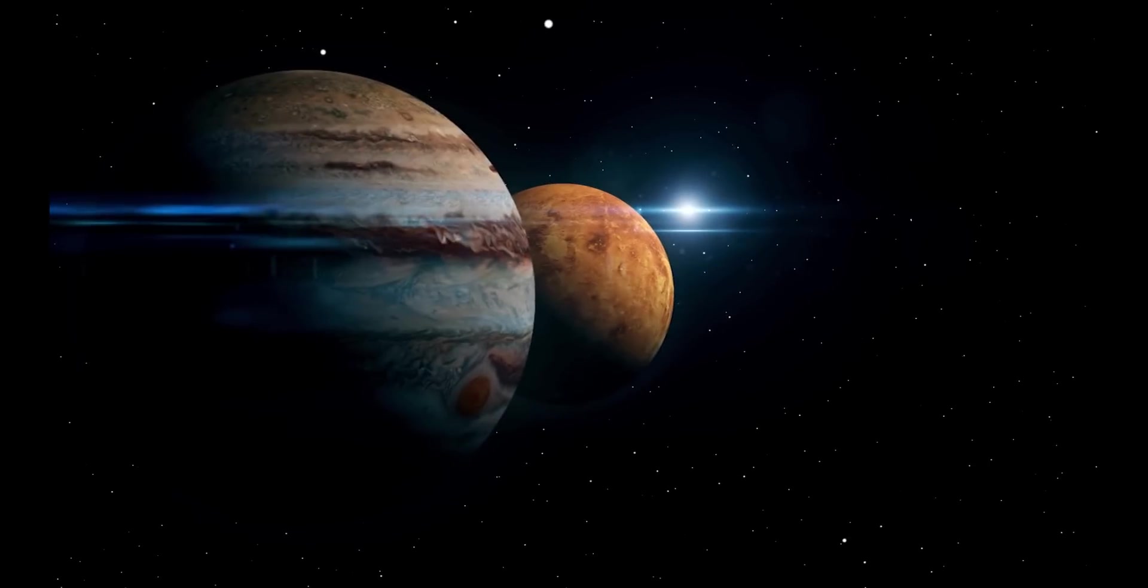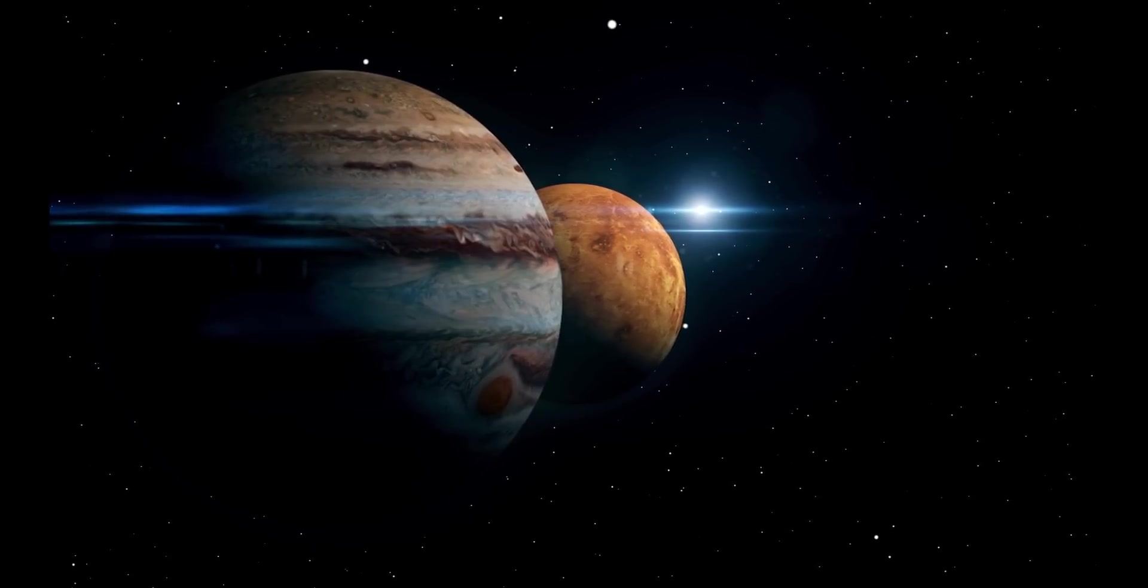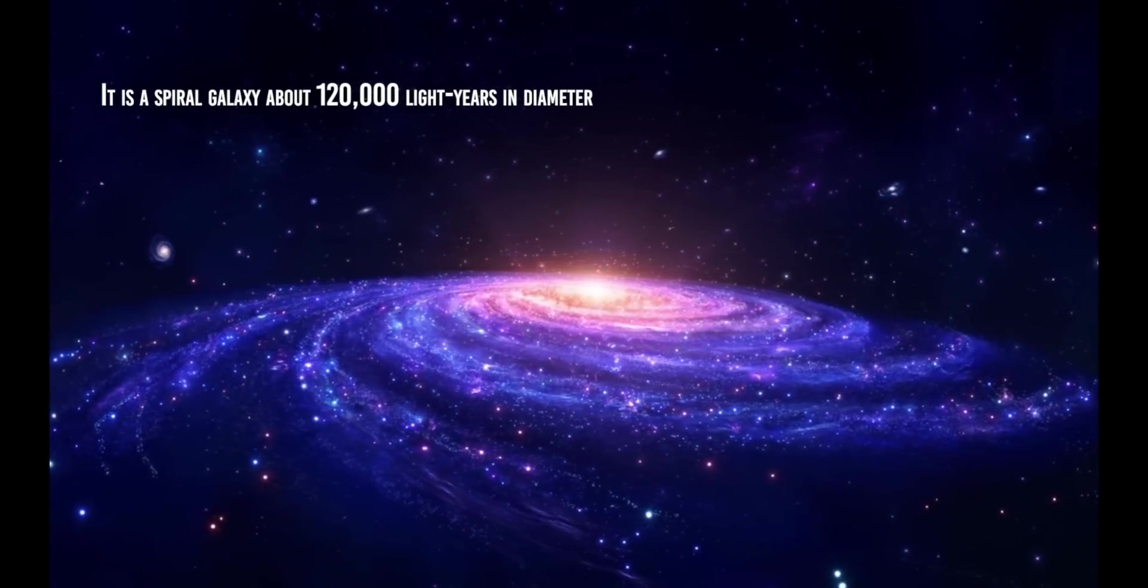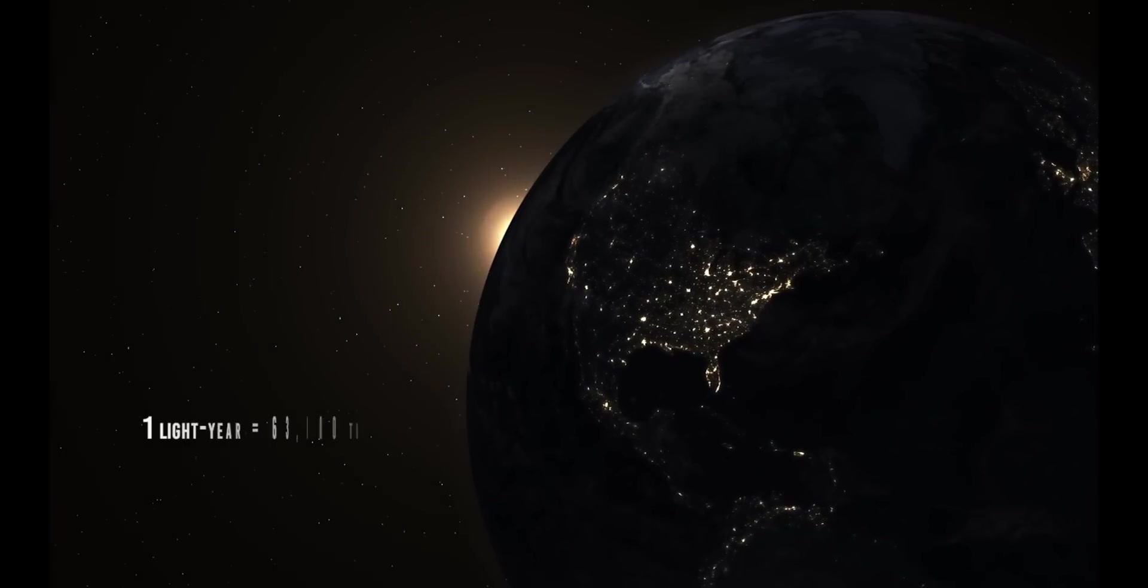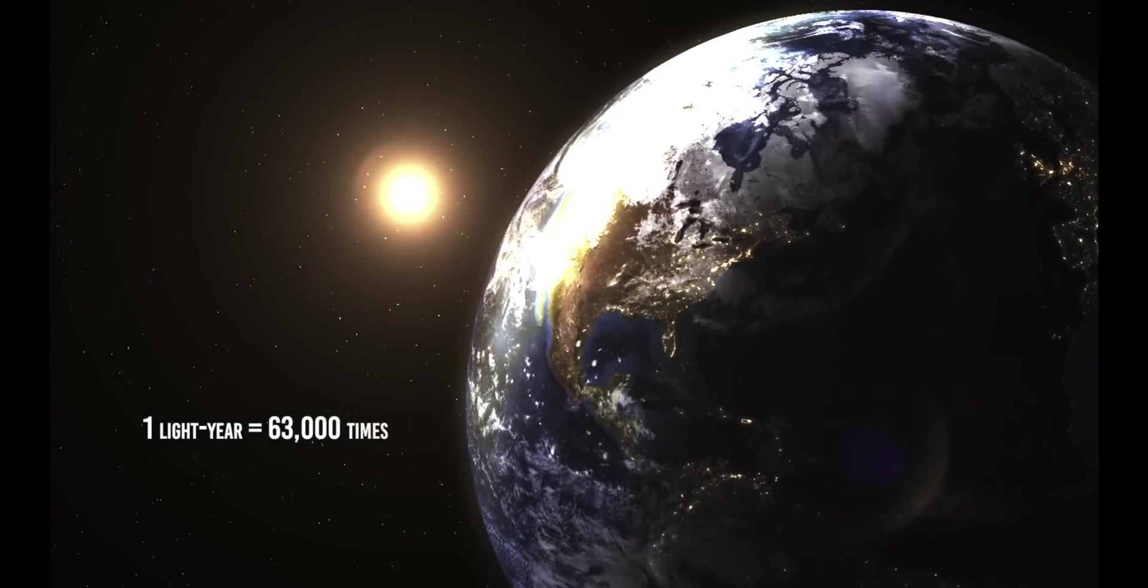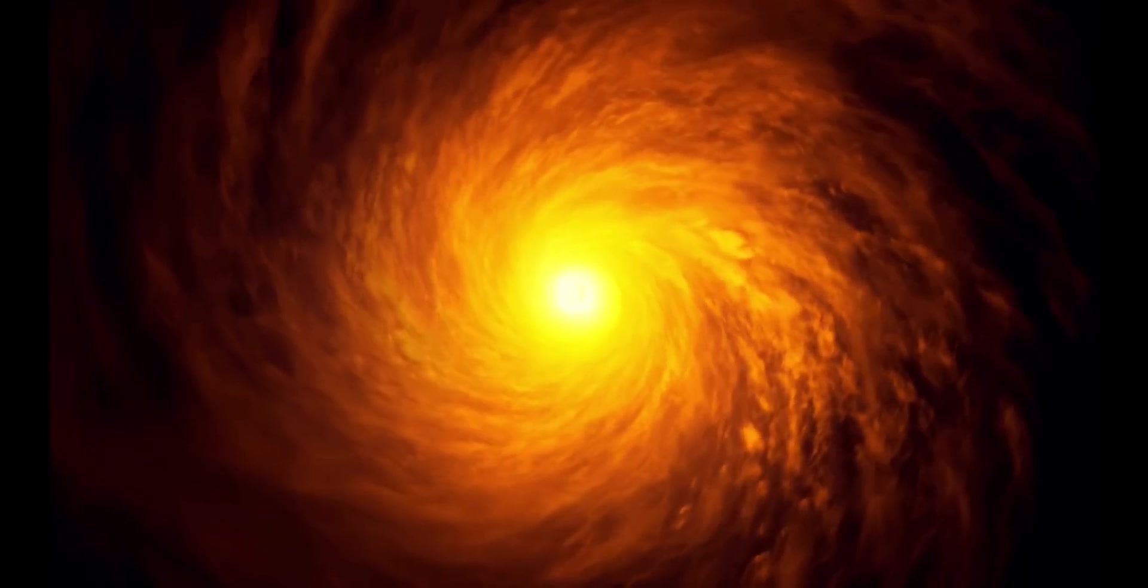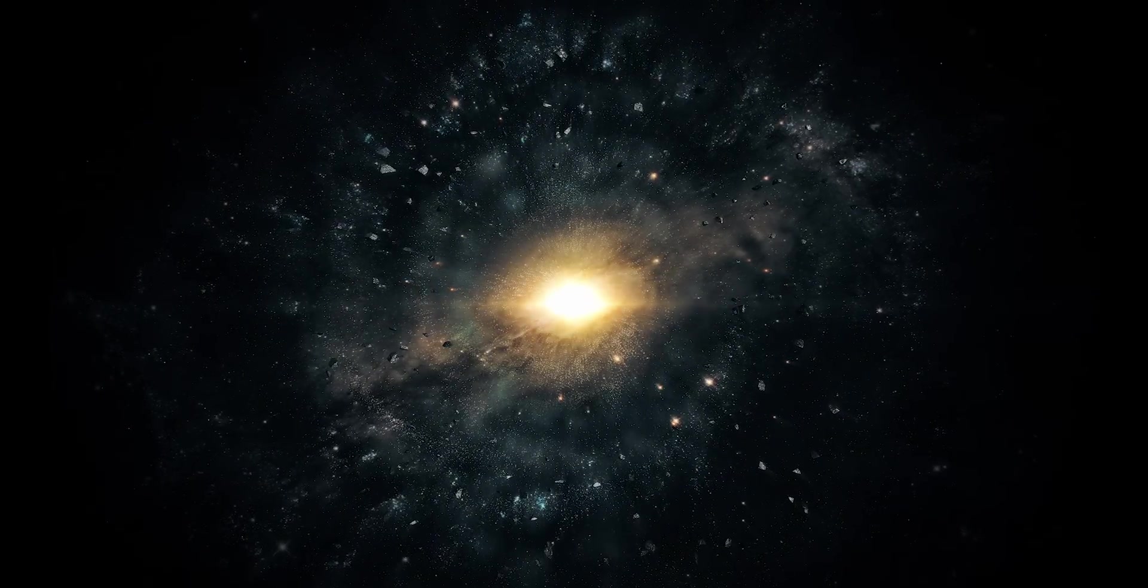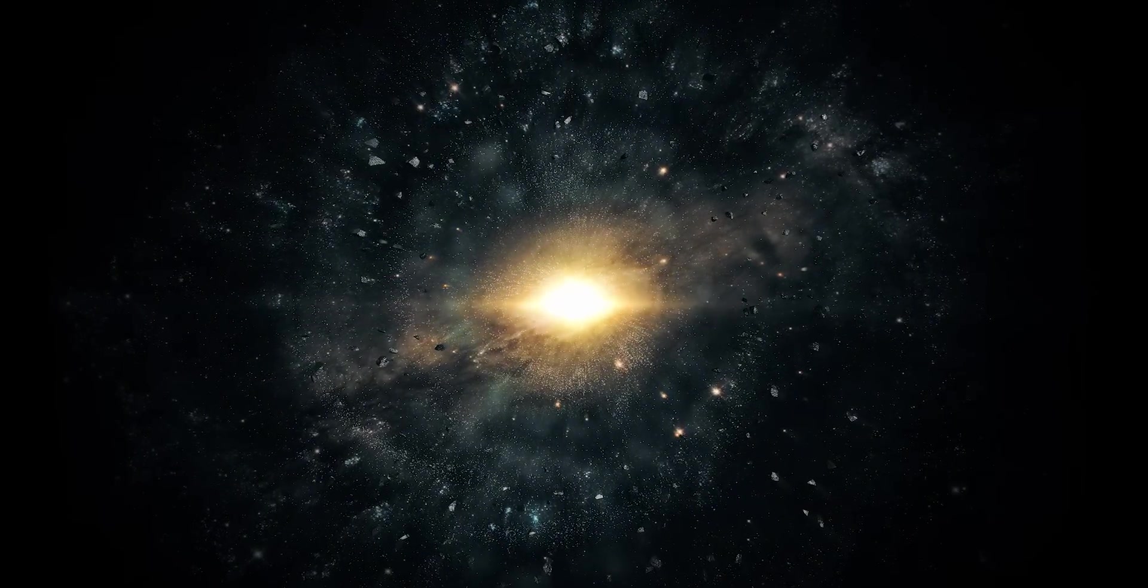We all know that what we call the Milky Way is nothing more than the galaxy that houses our planetary system. In this case, it is a spiral galaxy about 120,000 light years in diameter. Just to understand what a boundless size we are talking about, one light year is equivalent to about 63,000 times the distance between Earth and the Sun. Its basic structure consists of a stellar component compressed into a disk about 1,500 light years thick, a disk filled with hundreds of billions of stars, dust, and gas, mostly arranged in irregular spiral arms.